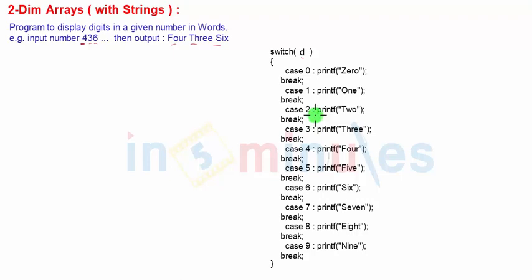Now in this case, we are going to input a number — it can be a two-digit, three-digit, or four-digit number — and each digit has to be displayed in words, one after another. This kind of output we have seen on electricity bills or mobile bills where the bill amount is printed in words. This is an interesting program.